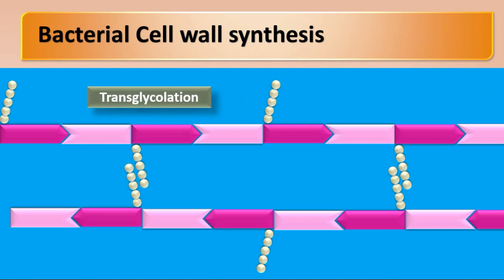Then extensive cross-linking of these polymer chains takes place to form a tough bacterial cell wall. This process is called transpeptidation.